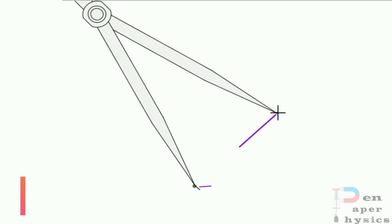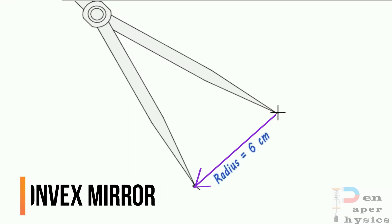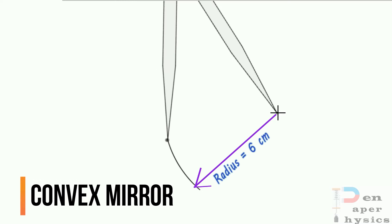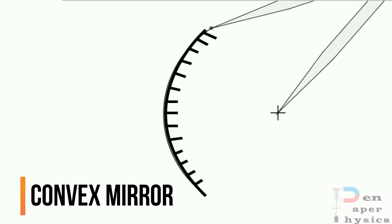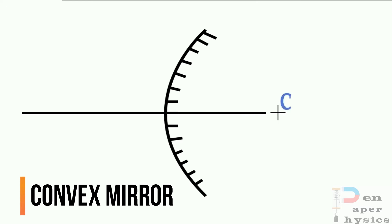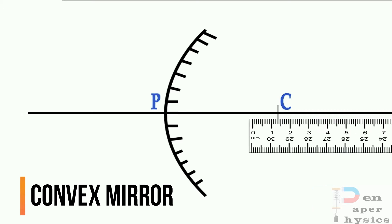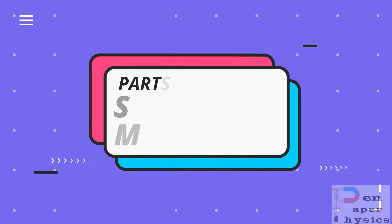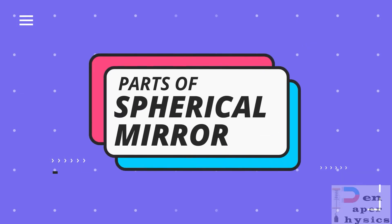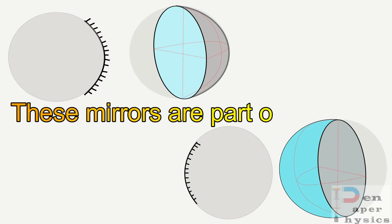We will follow the same method to draw the convex mirror. We take a 6-centimeter radius, draw the arc, mark the non-reflecting surface, name the center as C, draw a straight line, and since the radius is 6 cm, we mark F at 3 cm and also don't forget to mark P. Next we will learn about the different parts of a spherical mirror.